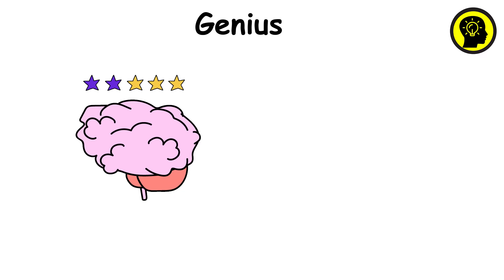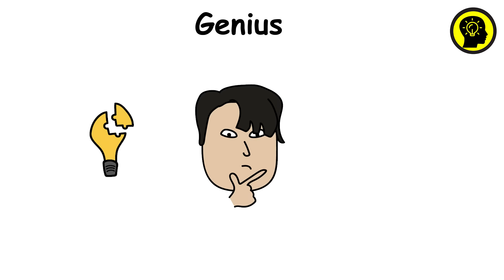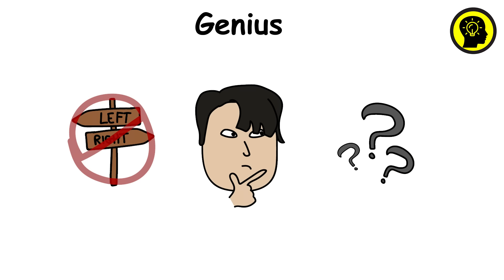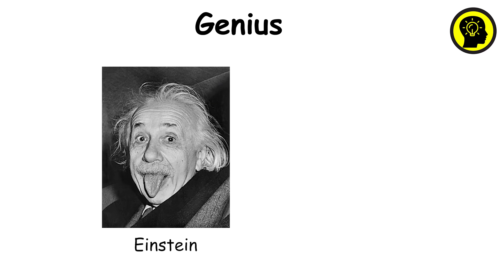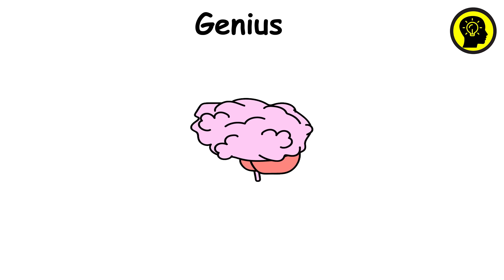Genius intelligence isn't just about being smart, it's a different architecture. Geniuses don't just solve problems, they rebuild the logic beneath them. They don't master rules, they question why the rules exist. Think Einstein, think Ramanujan, think people whose brains don't just run faster, they run sideways.